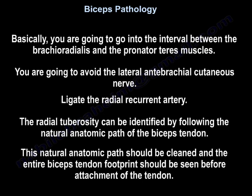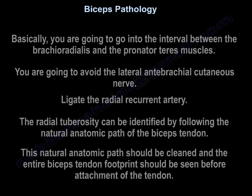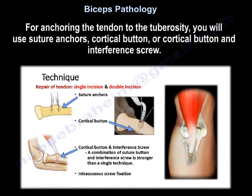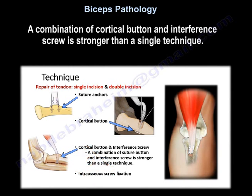You are going to go into the interval between the brachioradialis and pronator teres, avoid the lateral antebrachial cutaneous nerve, and ligate the radial recurrent artery. The radial tuberosity can be identified by following the natural anatomic path of the biceps tendon. This path should be cleaned and the entire biceps tendon footprint should be visualized before attachment. Anchor the tendon to the radial tuberosity and give a splint for about four weeks. For anchoring, you will use suture anchors, a cortical button, or a cortical button combined with an interference screw. A combination of cortical button and interference screw is stronger than a single technique. You can also use intraosseous screw fixation.